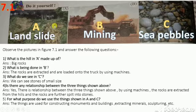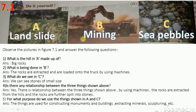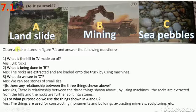Can you tell the similarity about all three pictures? The similarity is rocks. The difference is that in picture A, it is a natural calamity involving rocks. Now, based on this, we will try to find the answers. What is the hill in picture A made up of? Obviously, big rocks.